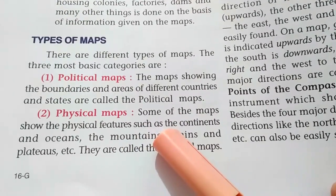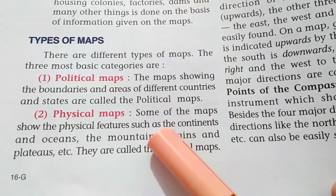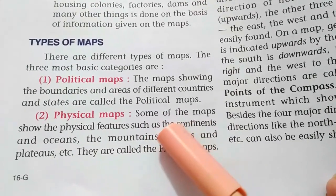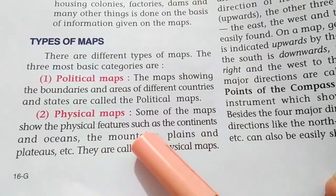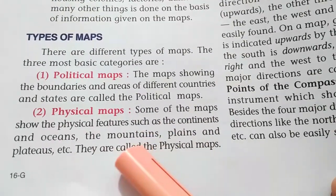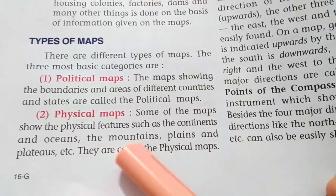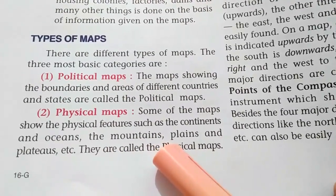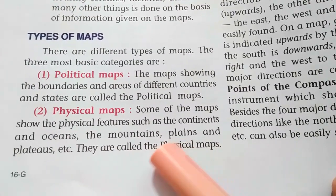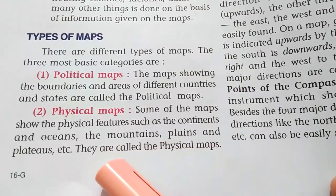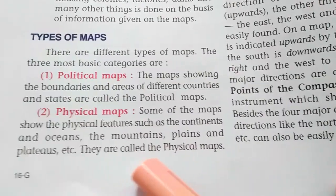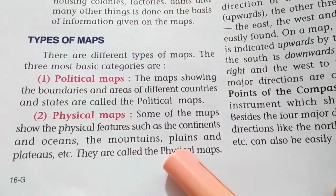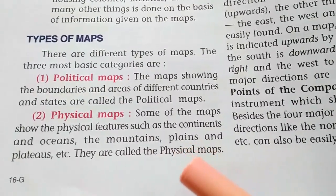Physical maps: some maps show the physical features such as the continents, oceans, mountains, and plains. Maps that show physical features like continents, oceans, mountains, plains, and plateaus are called physical maps.